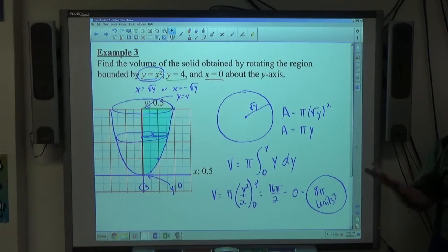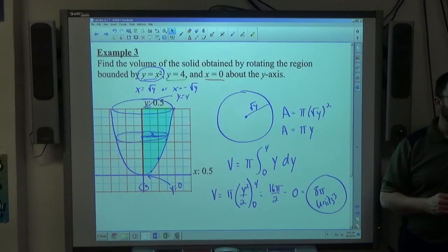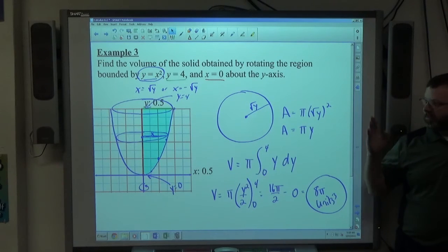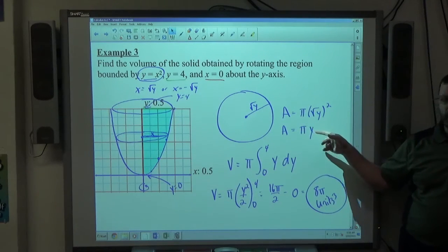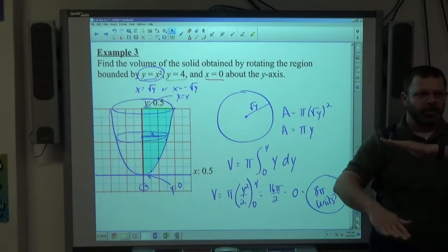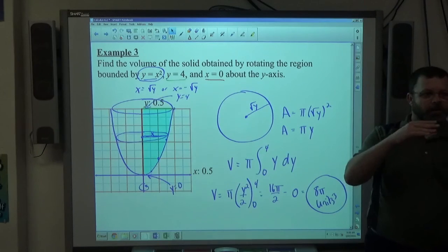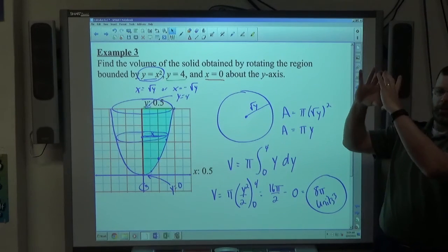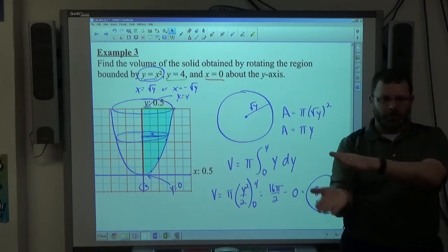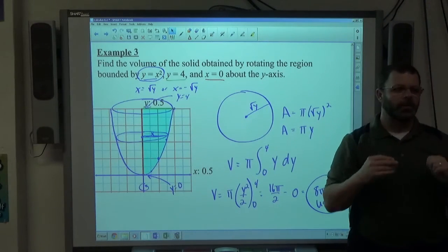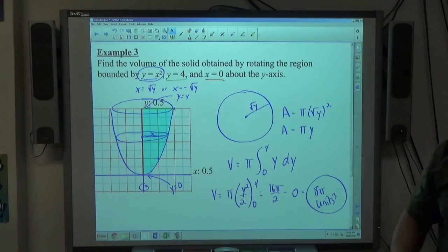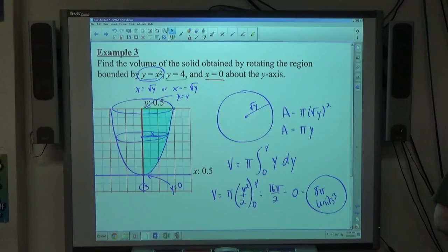Hopefully you can see through this example that the technique isn't any really different than it was before. Just a matter of figuring out what the area is in terms of the correct variable. If our circles are horizontally positioned, they're going to be moving vertically, so we want everything about y because y is vertical. If the circles turn vertically, they're going to be moved horizontally, so we want everything about x. That's the main thing with this, that's how we want to set these up each time in order to be able to work the problems.